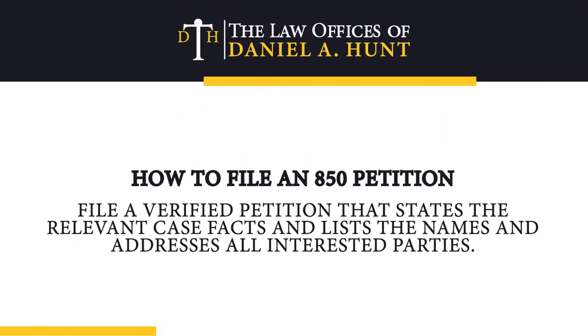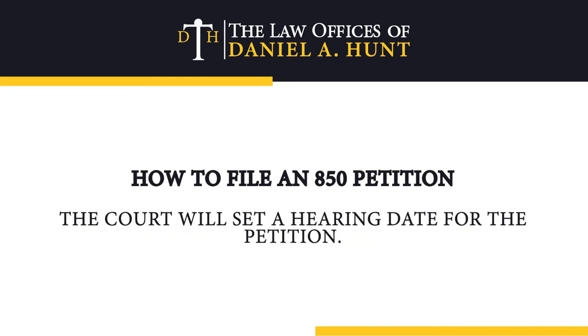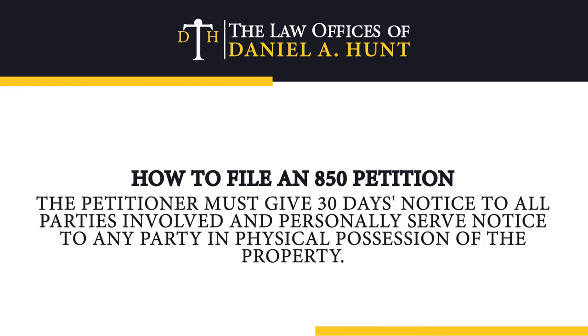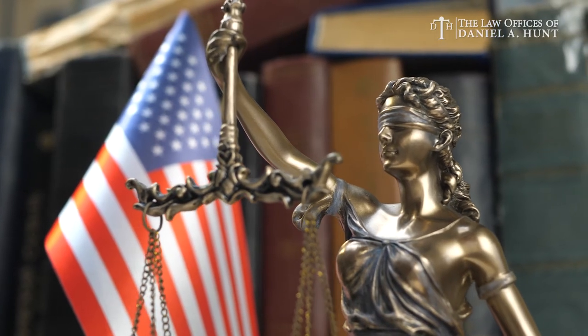Here's an outline of the basic process of filing an 850 petition. File a verified petition that states the relevant case facts and lists the names and addresses of all interested parties. The court will set a hearing date for the petition. The petition must give 30 days notice to all parties involved and personally serve notice to any party in physical possession of the property. Attend the court hearing and present documentation supporting your petition; then the judge will make a final decision. Most 850 petitions reach a decision within 60 days of filing, compared with 18 months or more for a probate.